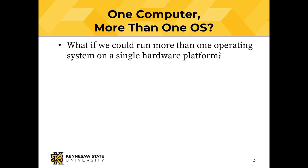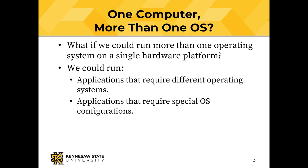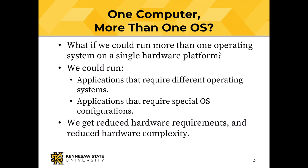This is the thing we call virtualization. If we can run more than one operating system on a single hardware platform — and I can — then we can solve those problems of OS compatibility without making the hardware manufacturers rich. We can run applications that require different operating systems, applications that require a special configuration of the OS. We have reduced hardware requirements, but there's no such thing as a free lunch — we're going to pay for the reduced hardware requirements with complex software. And we keep those CPUs busy, using the CPU cycles of that expensive CPU to get actual work done.